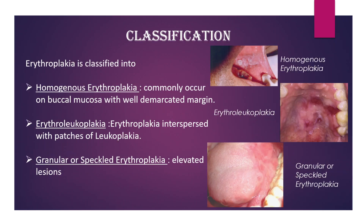Now let's learn the classification. Erythroplakia is classified into homogenous erythroplakia, erythroleukoplakia, and granular or speckled erythroplakia. Homogenous erythroplakia commonly occurs on buccal mucosa with well-demarcated margins. In erythroleukoplakia, erythroplakia is interspersed with patches of leukoplakia. Granular or speckled erythroplakia consists of elevated lesions.